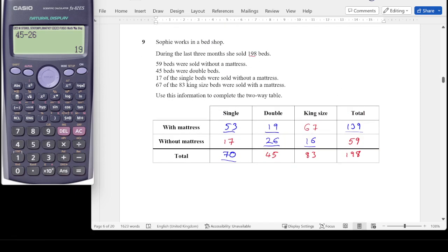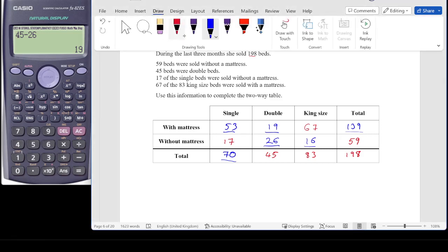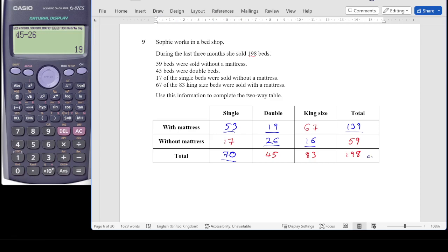The mark scheme for question 9: C1 for all of my red values, the initial given information. Then another C1 for at least one unknown piece of data calculated. And C1 for final fully complete table. So three marks in total.